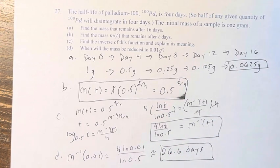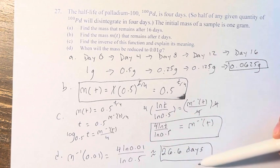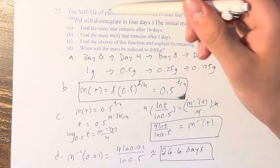And by finding the inverse function, we were able to calculate this easily because it represents the opposite relationship of what we found in part a, which is mass over time.